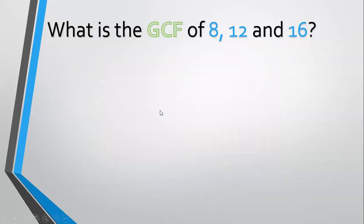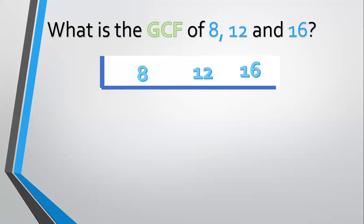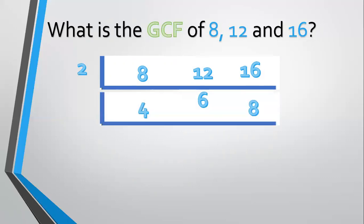Another example — how about 8, 12, and 16? List them: 8, 12, and 16. Divide by 2: 8 divided by 2 equals 4, 12 divided by 2 equals 6, 16 divided by 2 equals 8. All are still even, so divide by 2 again: 4 divided by 2 equals 2, 6 divided by 2 equals 3, 8 divided by 2 equals 4. Now 2, 3, and 4 have no more common factor — stop there. Multiply the common factors: 2 times 2 equals 4. The GCF is 4.